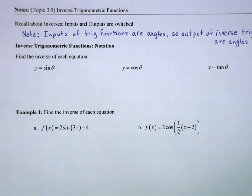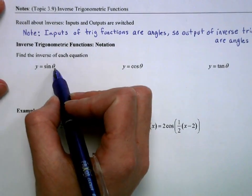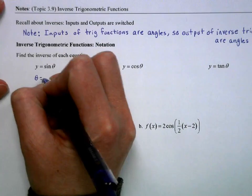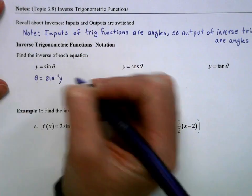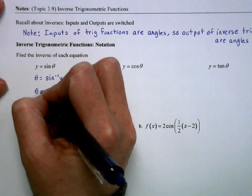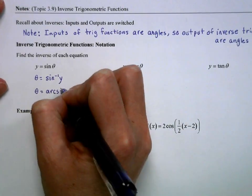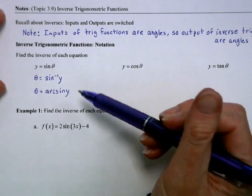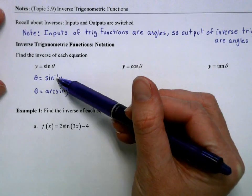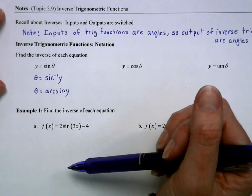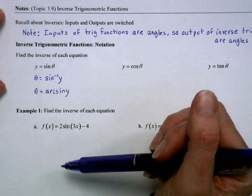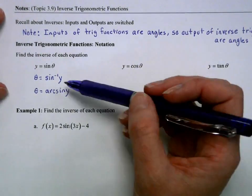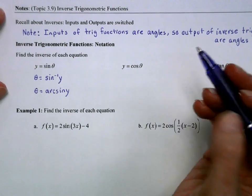Let's talk about the notation. They're inverses, so x and y — in this case theta and y — are going to switch positions. There are two notations: y equals sine of theta means theta is equal to sine inverse of y. This is also called arcsine of y. This notation came around with calculators. It's not a great notation, because if I have x to the negative 1, that's equivalent to 1 over x, but sine to the negative 1 does not mean 1 over sine. We understand it to be the inverse of sine.